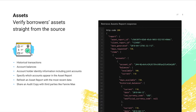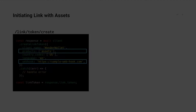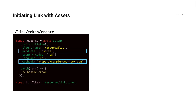This data is commonly used to verify a borrower's asset balances or to evaluate their creditworthiness based on their cash flows. In addition to this bank data, Plaid will also return the name, email, phone number, and address of the borrower associated with each bank account. This information can be used to verify the bank account belongs to the borrower.